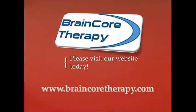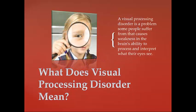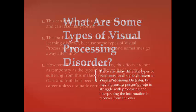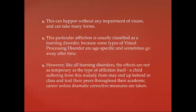This presentation is brought to you by BrainCore Therapy. A visual processing disorder is a problem some people suffer from that causes weakness in the brain's ability to process and interpret what the eyes see. There are many different types of this generalized malady, but they all cause a person's brain to struggle with processing and interpreting the information it receives from the eyes. This can happen without any impairment of vision and can take many forms.